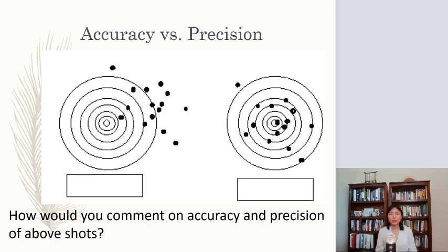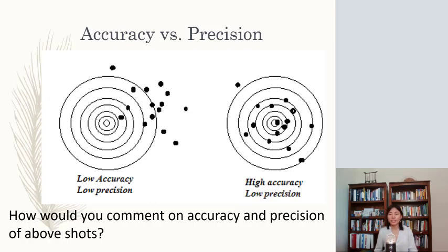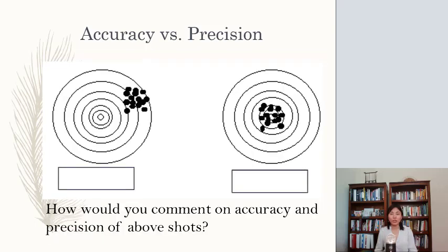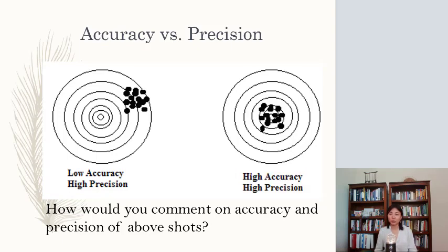So the first one is you shoot the target several times and the dots represent your score. And as you can see, if you look at the center of all the dots, it is far away from the center of the target. Therefore, it has very low accuracy, low precision. And the second one is high accuracy but low precision, because all your shots are scattered. Now if you look at the third one, it is low accuracy but high precision. And the very last one, high accuracy, high precision.